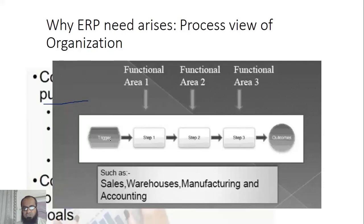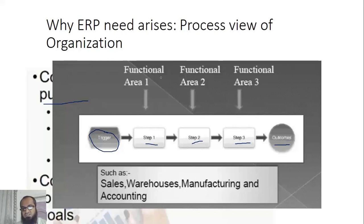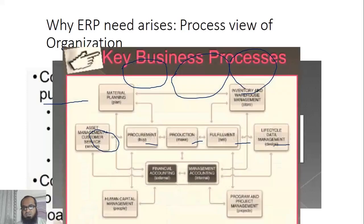A process is always triggered by something — an event. For example, the purchasing process for a laptop is triggered by my need, my email to the admin department saying I need a laptop. Then there is step one: admin approves it. Step two: the purchase department procures it. Step three: payment is eventually made and I receive the laptop. I need it to impart learning — that is IBA's goal. To meet that goal there are business processes, and those processes cut through different functional areas: admin, purchase, and accounting and finance.